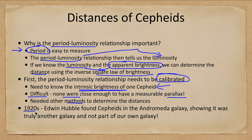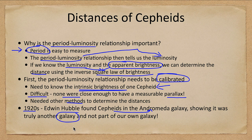In the 1920s, Edwin Hubble found Cepheids in the Andromeda Galaxy, measuring their distances, and found out that the Andromeda Galaxy was actually another galaxy and not a part of our own.